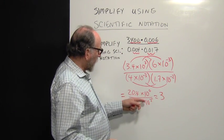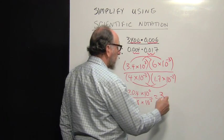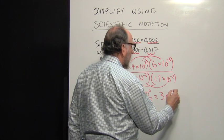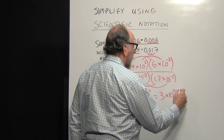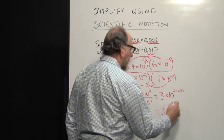And 10 to the zero power divided by 10 to the negative 5 would mean we subtract those exponents. So that's 10 to the zero minus negative 5. Or this is 3 times 10 to the positive 5.